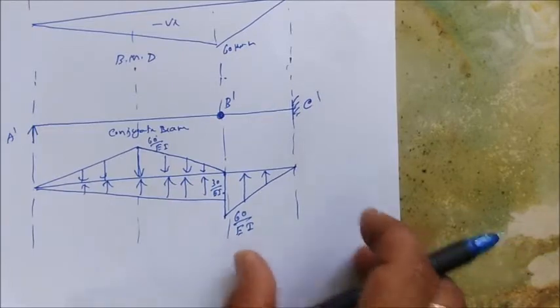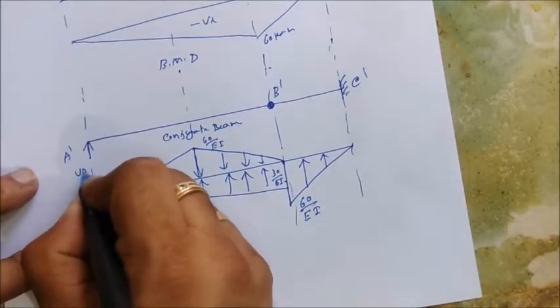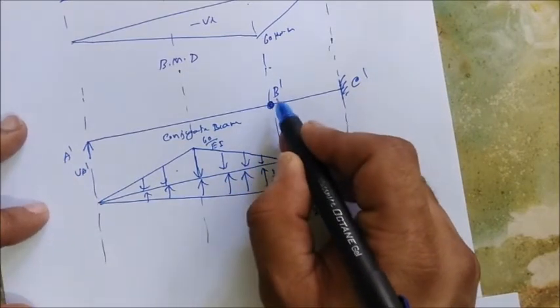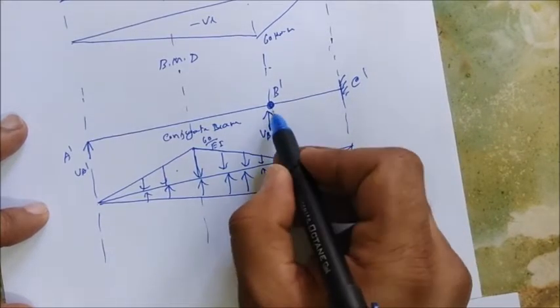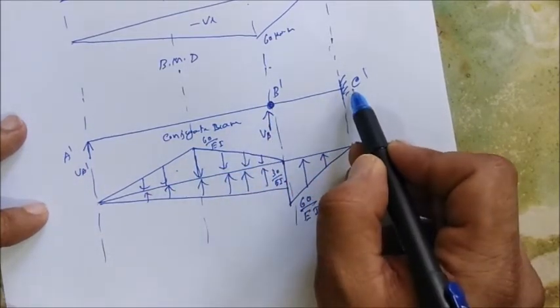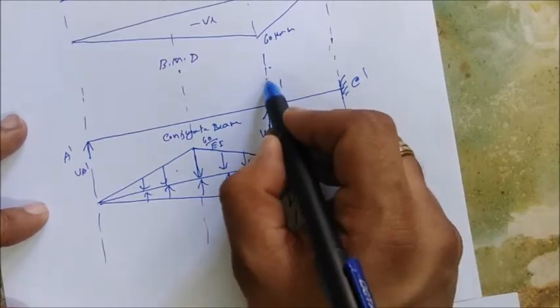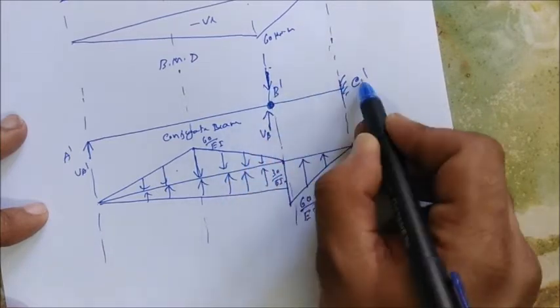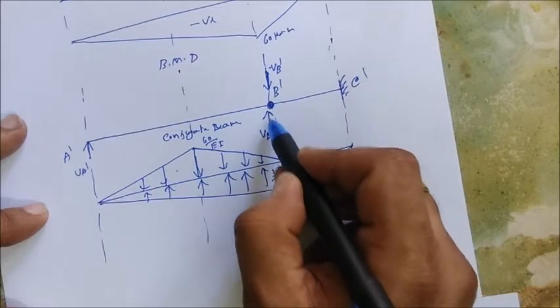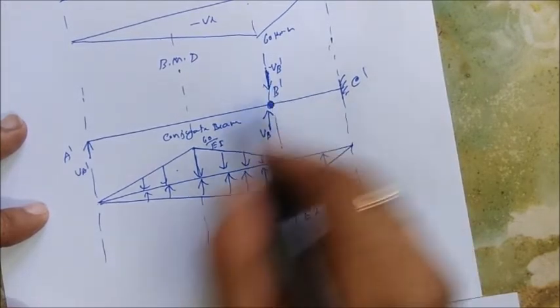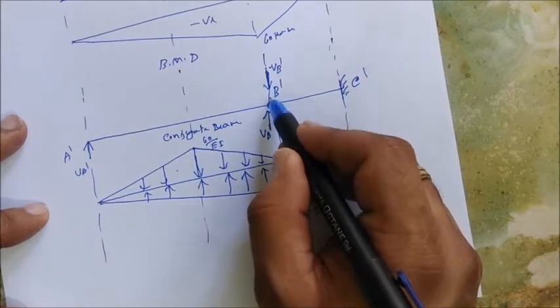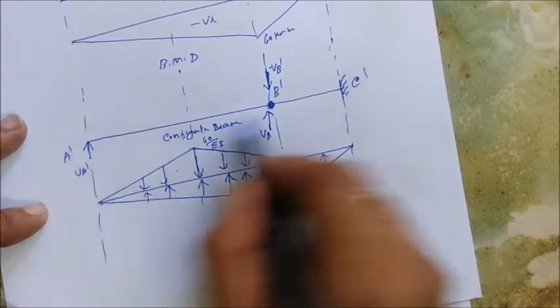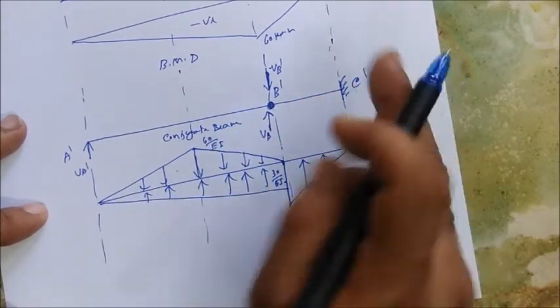Everything is ready. Let's analyze it. To find the slope, we need the reaction V_A' and V_B'. When we treat B' as a hinge, we analyze two separate beams: A'B' and B'C'. The reaction at B' will act as a load for the B'C' span. Two sub-loads are acting at B' — if one is upward, it acts downward on the other span. V_B' is the reaction from the AB span which acts as a load for region B'C'.